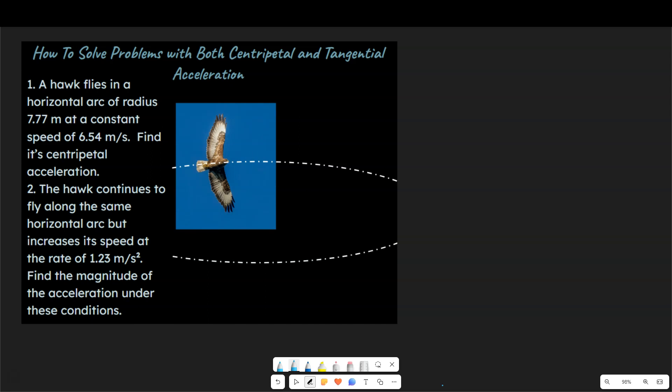So this is appropriate for a physics or an AP physics class or maybe even a physical science class if you're going to address this with a more rigorous physical science class. And it really gets to the idea that there are two different kinds of accelerations that you can keep track of when you have an object moving in a circular path.